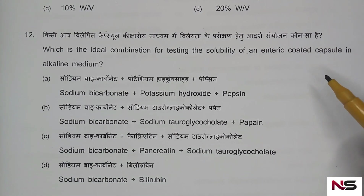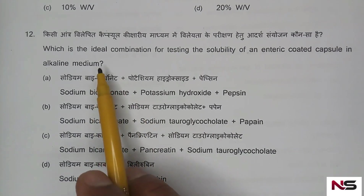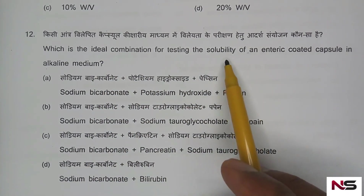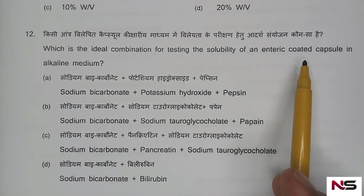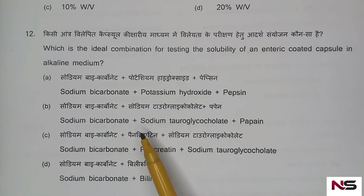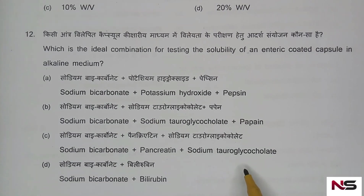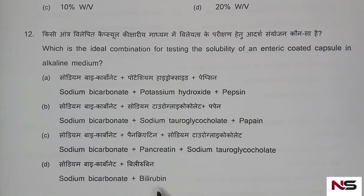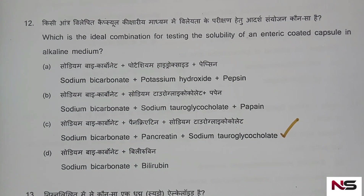Question 12: Which is the ideal combination for testing the solubility of an enteric coated capsule in alkaline medium? Options: A) sodium bicarbonate + potassium hydroxide + pepsin, B) sodium bicarbonate + sodium tauroglycolate + pepsin, C) sodium bicarbonate + pancreatin + sodium tauroglycolate, D) sodium bicarbonate + bilirubin. The correct answer is option C: sodium bicarbonate plus pancreatin plus sodium tauroglycolate.